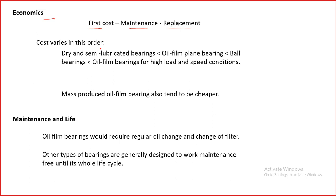Bearings form a very important part of the total overall cost of the machine. In most cases, bearings are replaced quite frequently because failure initiates at the bearings, making them a running cost. Cost varies in this order: dry and semi-lubricated bearings have the least cost, followed by oil film plane bearings, ball bearings, and oil film bearings with high load and speed conditions. Mass produced oil film bearings also tend to be cheaper.